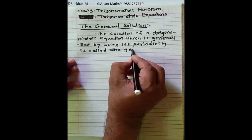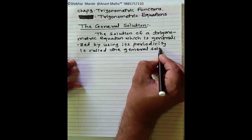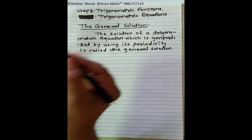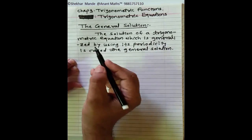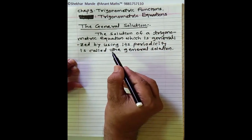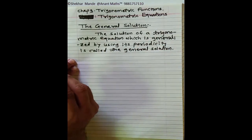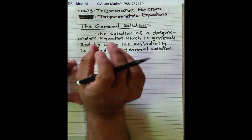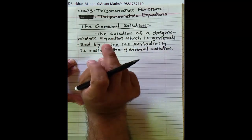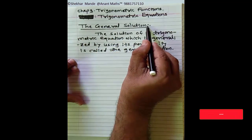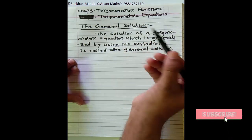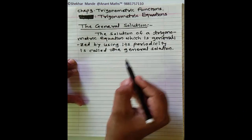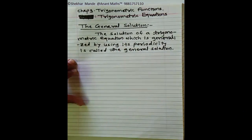The principal solution may be finite — in some cases it may be infinite, but mostly the principal solution is finite. In the last example we had seen that the principal solutions are two. But the general solution is infinite — that is, any equation has infinitely many general solutions. So this solution is known as the general solution.